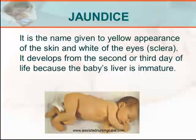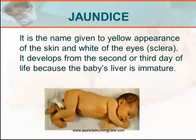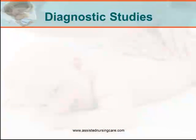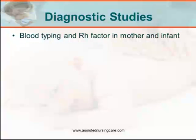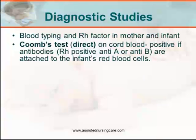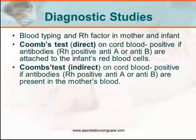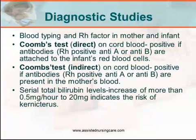As mentioned, jaundice is one of the pathognomonic features of hyperbilirubinemia. The diagnostic studies that may confirm jaundice and hyperbilirubinemia include blood typing and Rh factor in mother and infant, a direct Coombs test which is positive if antibodies are present in the mother's blood, and a series of total bilirubin level tests — an increase of more than 0.5 mg per hour or a level of 20 mg may indicate the risk of kernicterus.